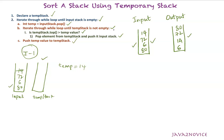As a second step, we create a while loop and take the top element of the temporary stack and compare it with the temporary variable. In the first iteration, the temp stack is empty, so it will never enter the inner while loop. We come to the final step and push 14 into the temporary stack.